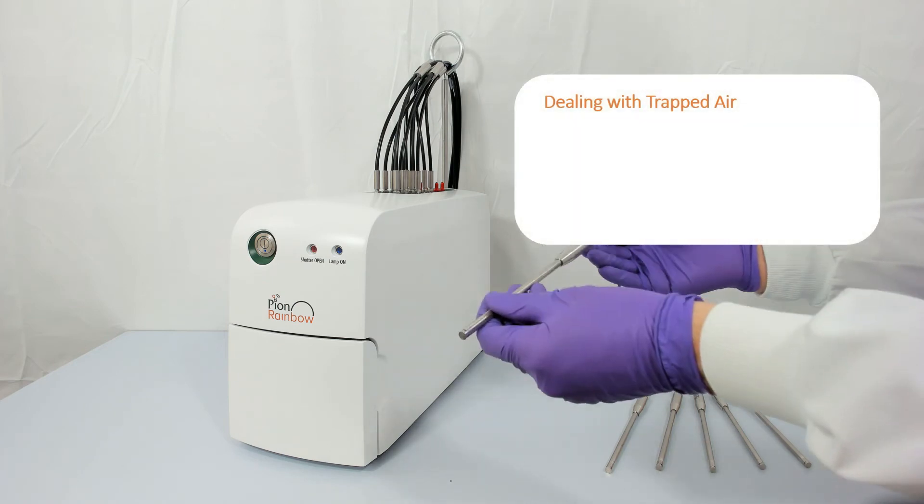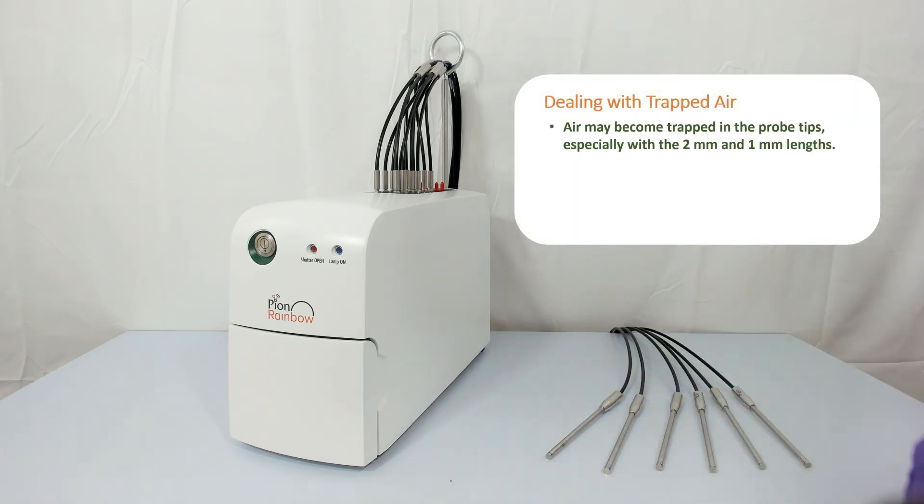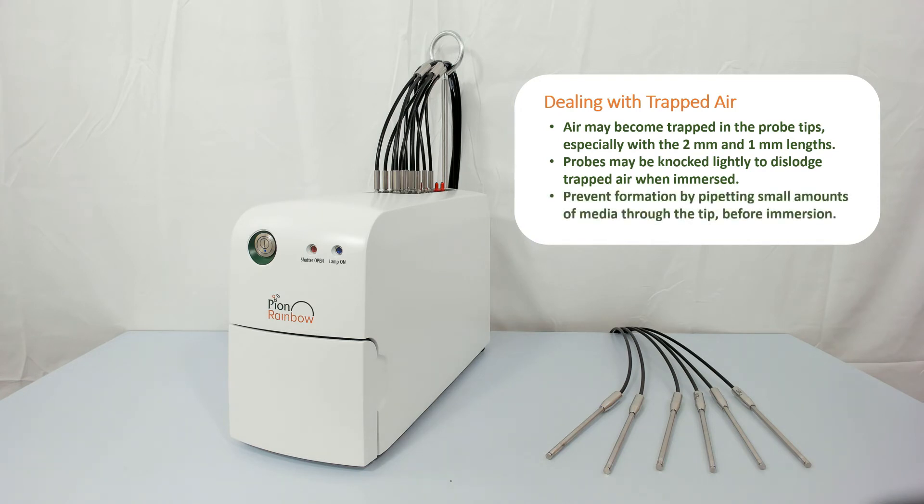As the path length reduces, the likelihood of air bubbles becoming entrapped in the path becomes greater, especially so with the 2 and 1 mm tips. Bubbles may be removed from the path either by knocking the probes lightly, or their formation may be discouraged by rinsing the probe tip with a small amount of the medium prior to immersion, in order to break the surface tension between air inside the tip and the medium. Using degassed media is also advisable.